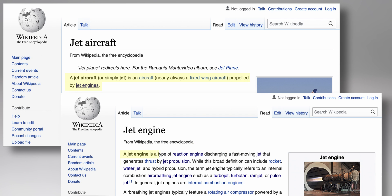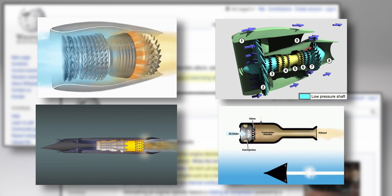A jet engine is a type of reaction engine discharging a fast-moving jet that generates thrust by jet propulsion. The term jet engine typically refers to an internal combustion air-breathing jet engine such as a turbojet, turbofan, ramjet, or pulsejet.